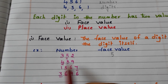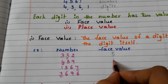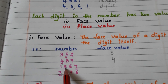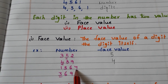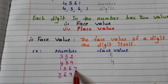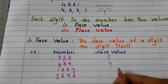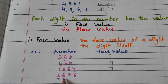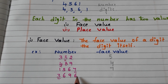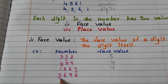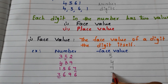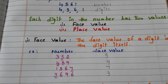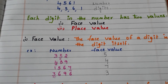In the number 489, what is the face value of 4? 4 itself. In the number 1567, what is the face value of 7? 7 itself. In the number 3696, what is the face value of 3? 3 itself. In this way, we find the face value.